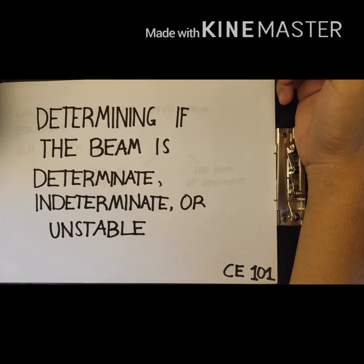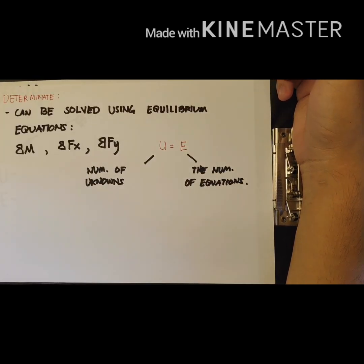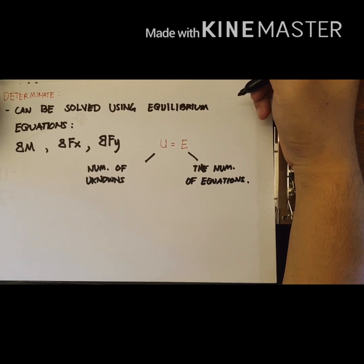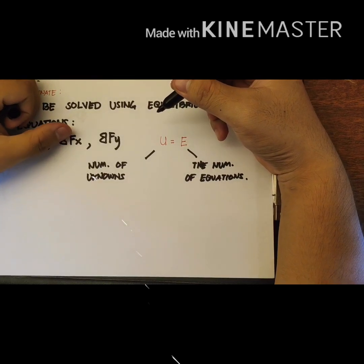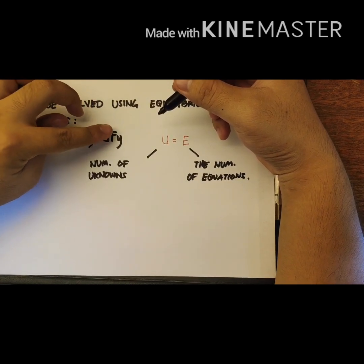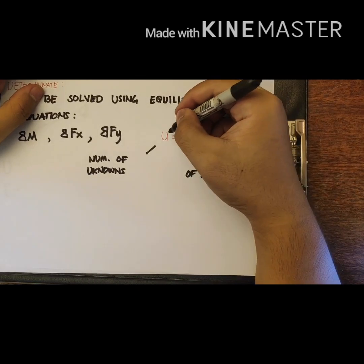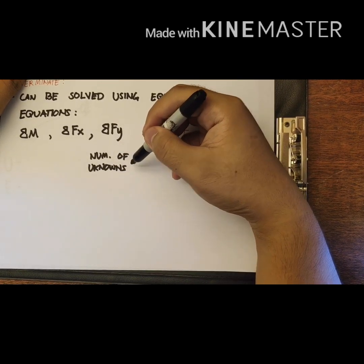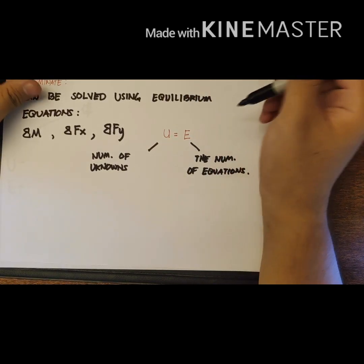Welcome to CE101. Today's topic is determining if a beam is determinate, indeterminate, or unstable. Determinate beams can be solved using equilibrium equations: the summation of moments, summation of forces along the x-axis, and summation of forces along the y-axis. The formula for determinate beams is U equals E, where U is the number of unknowns and E is the number of equilibrium equations used in the given problem.